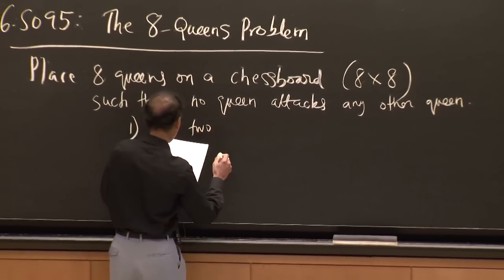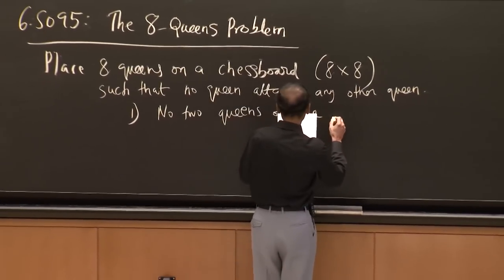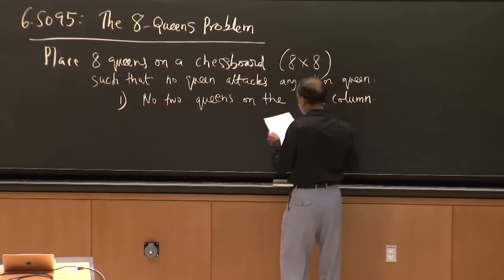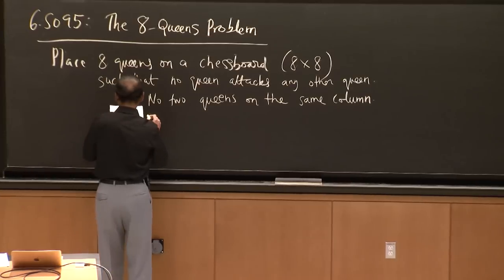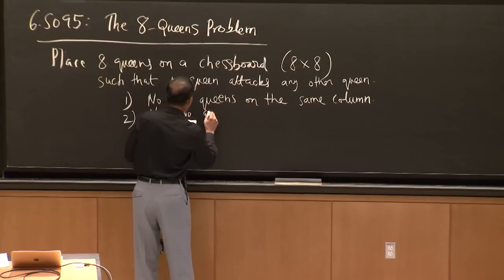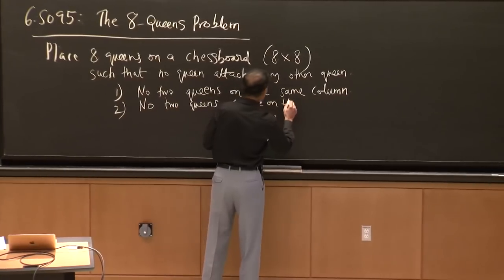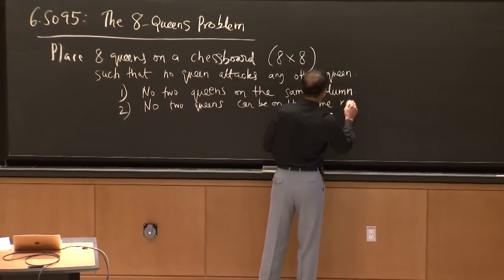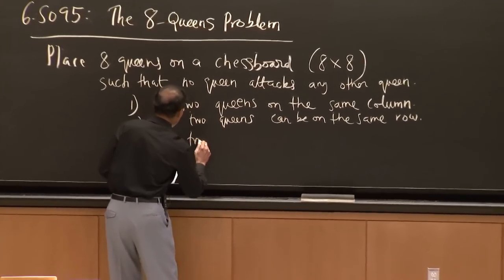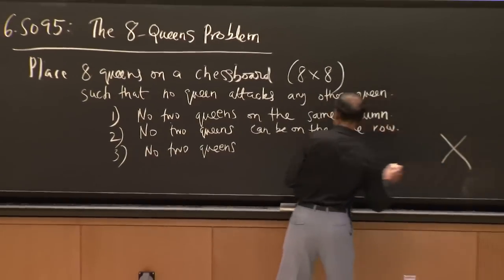You want to translate the movement of the queens into a set of rules that tell you if you've found a solution. There are essentially three rules because a queen can move in three different ways: no two queens can be on the same column, no two queens can be on the same row, and no two queens can be on the same diagonal — and remember, there are two diagonals, one going each way.